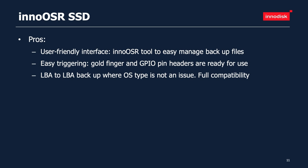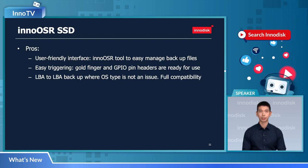What are the major advantages of Inno OSR SSD? First, it is very user friendly — we provide the Inno OSR tool to create backup files and manage them. Secondly, it is easy to trigger — gold fingers and GPIO pin headers are ready for use. Thirdly, LBA-to-LBA backup where OS type is not an issue. Inno OSR also provides full capability.